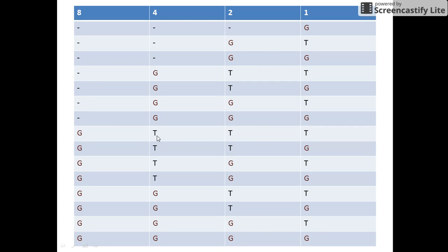On the eighth day he gives back the cuts of four units, two units, and one unit respectively, and gets the eight-unit cut. On the ninth day he gets the one-unit cut. On the tenth day he gives back the one-unit cut and gets the two-unit cut, so the employee holds cuts of two units and eight units at the end of day ten. On the eleventh day he gets the one-unit cut. On the twelfth day he returns the one-unit and two-unit cuts and gets the four-unit cut, so the employee has cuts of eight units and four units at the end of day twelve. Similarly, on the 15th day he gets back all the cuts of the gold rod.